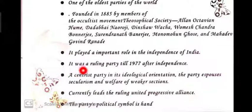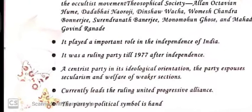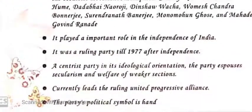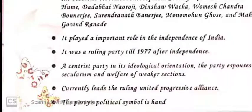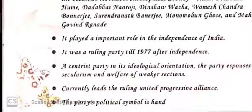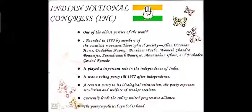It was a ruling party till 1977 after independence. A centrist party in its ideological orientation, the party espouses secularism and welfare of weaker sections. Currently it leads the ruling United Progressive Alliance — the UPA government. The party's political symbol is a hand, sometimes called 'Panja.'